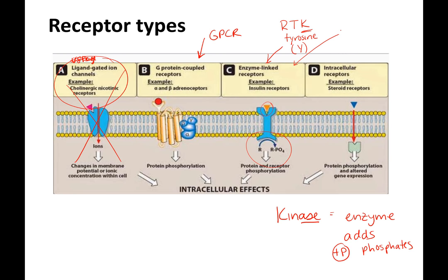The other type we'll talk about is receptor serine-threonine kinases, which means they phosphorylate the amino acid serine or threonine.